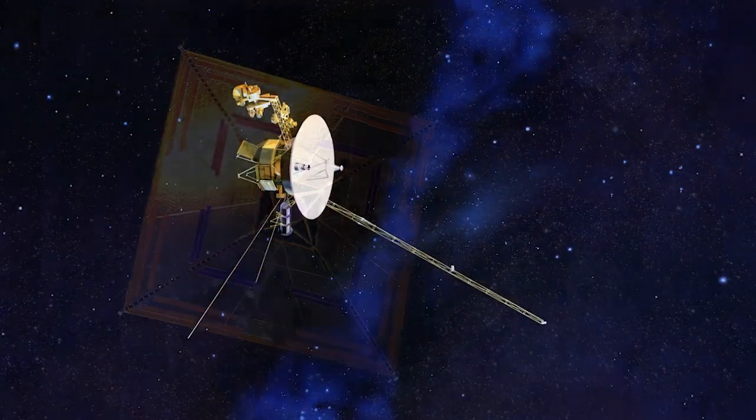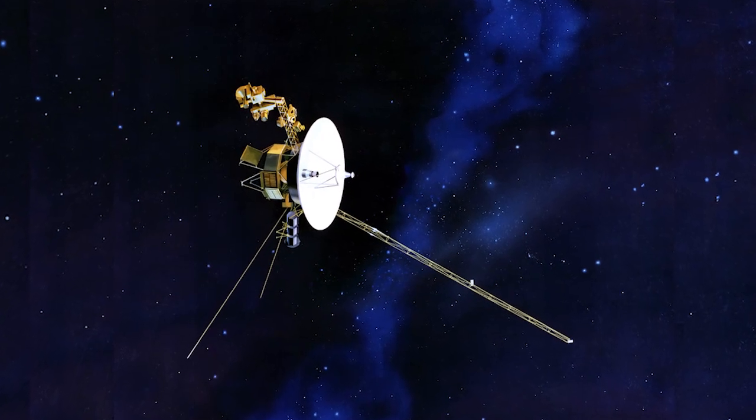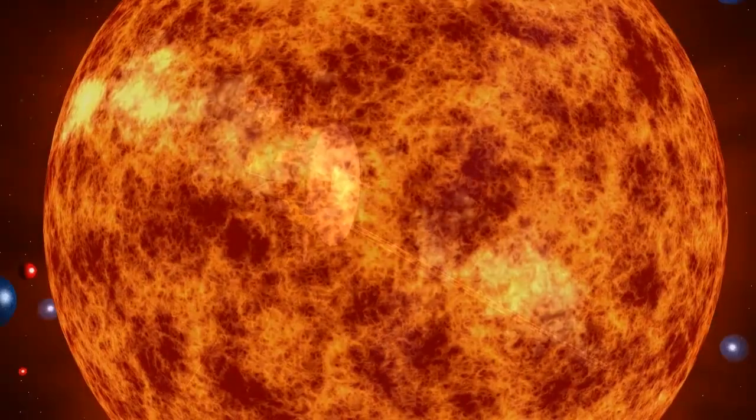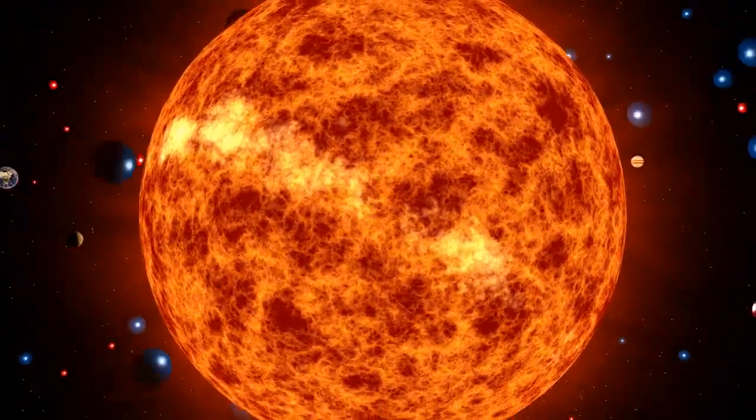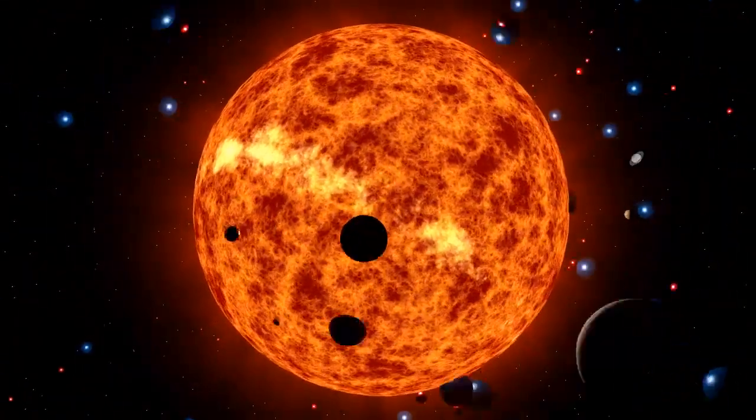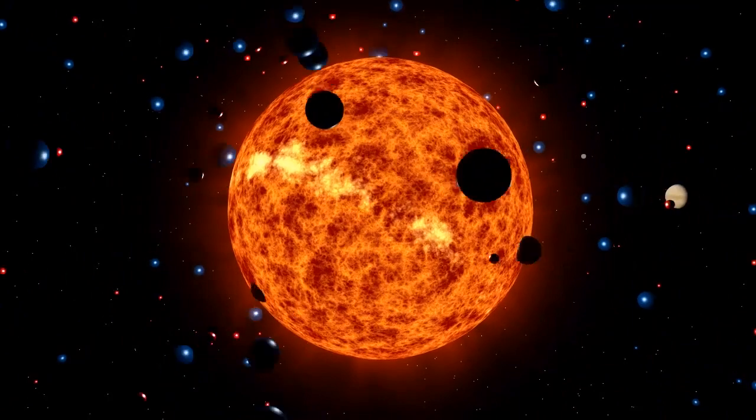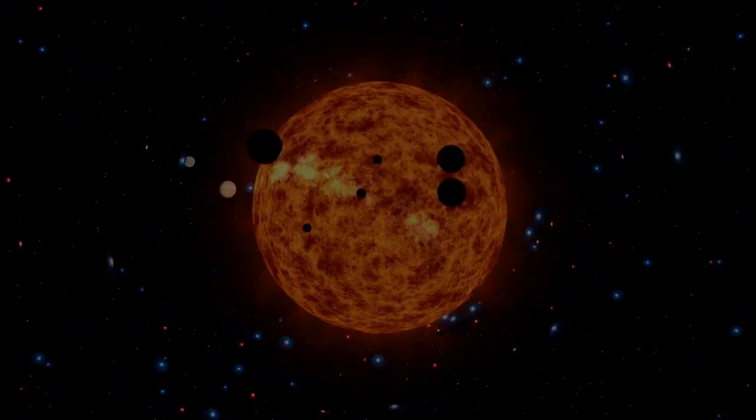For example, it took the Voyager spacecraft 35 years to reach the edge of the solar system. The Sun continually releases protons and electrons into the solar wind. A spacecraft can achieve high speeds by riding this solar wind.